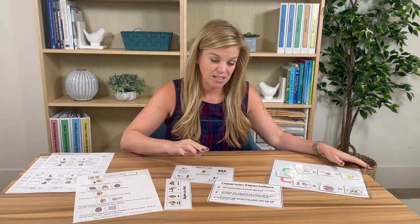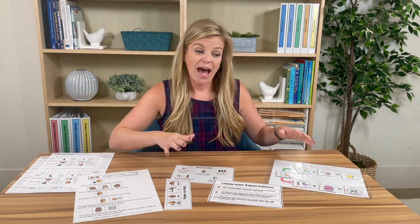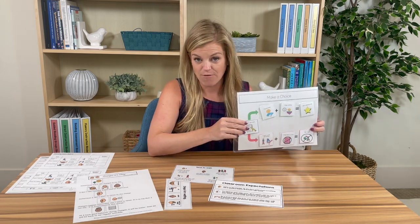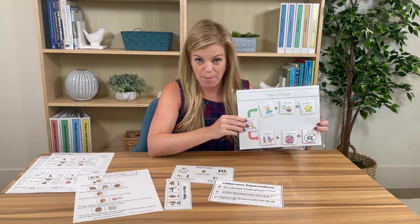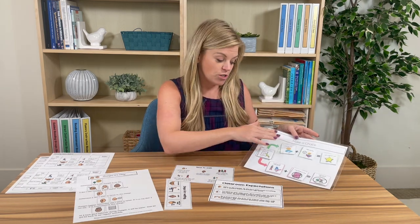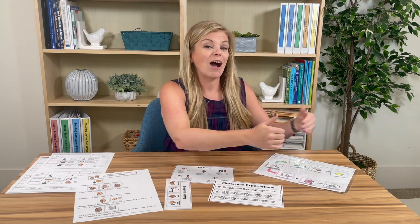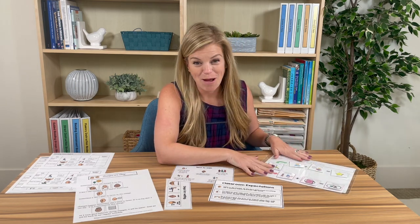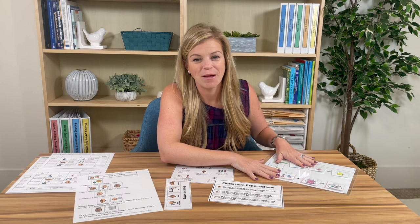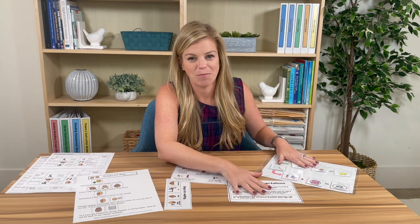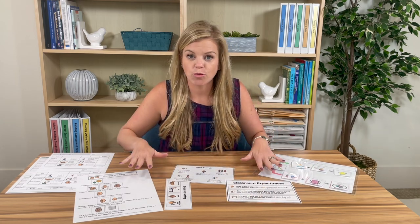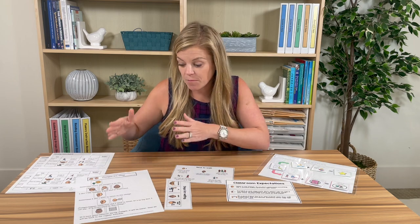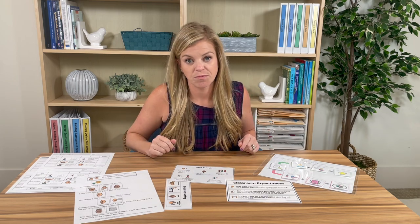Writing out classroom expectations and having that text there is a visual cue. For students who need more visual support, something like a behavior contingency map shows the options they have and how consequences change. Behavior maps are great — they summarize your whole behavior plan on one sheet of paper. Show classroom rules and expectations using pictures and text as visuals.